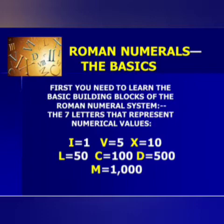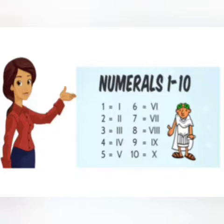So let's learn these letters: I, V, X, L, C, D and M. These are the English alphabets used to express Roman numbers. To write numbers 1 to 10, we need to use just 2–3 alphabets: I, V, and X. If you have to write 1, that is I.